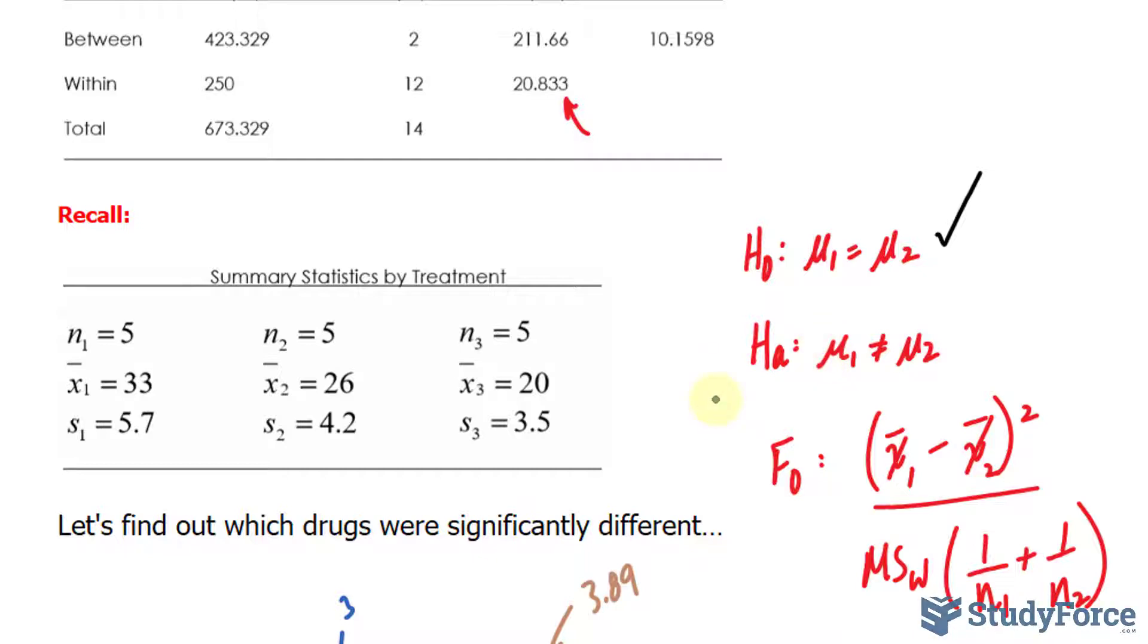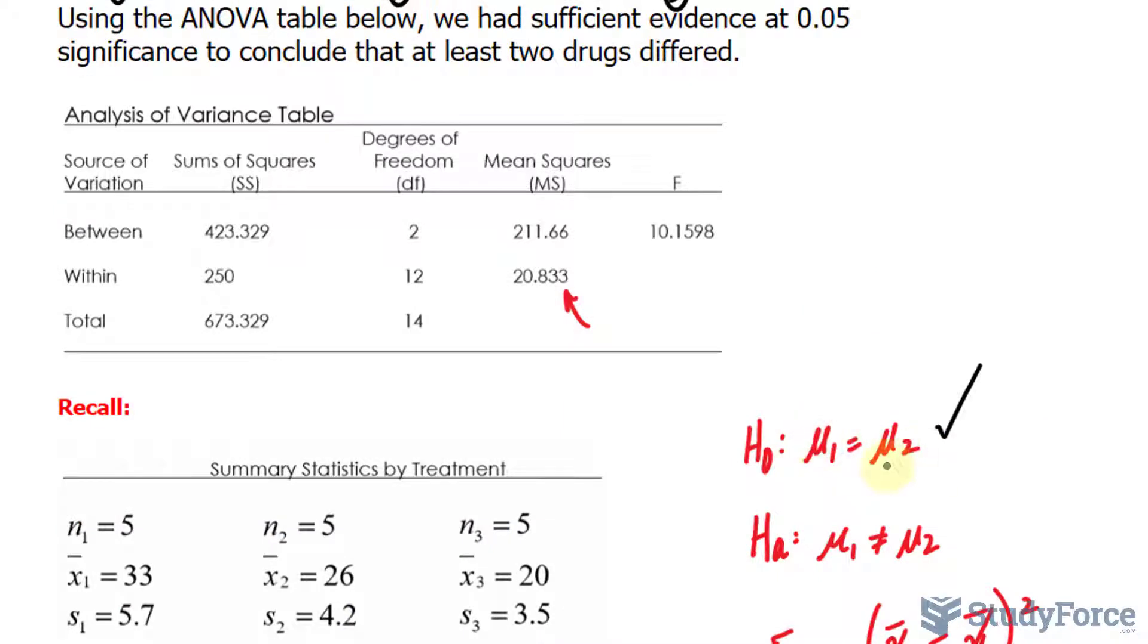You always make a conclusion based on the alternative, not the null hypothesis. So that compared group 1 and 2.